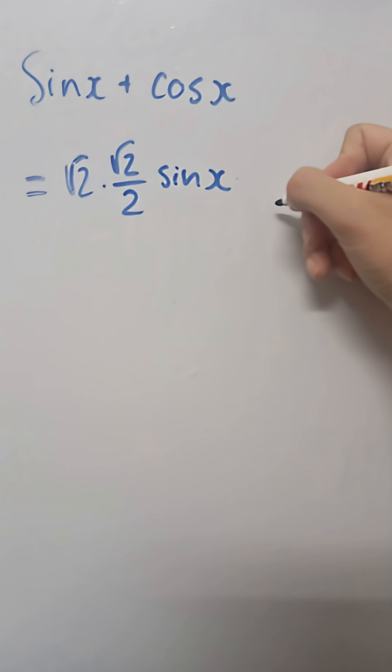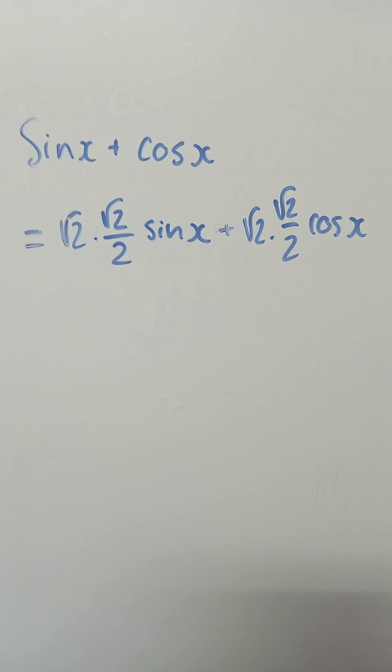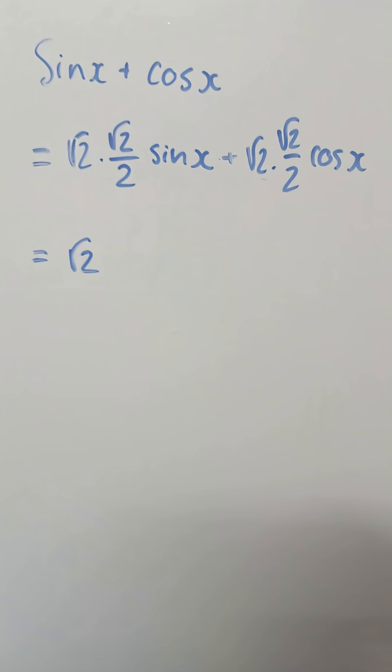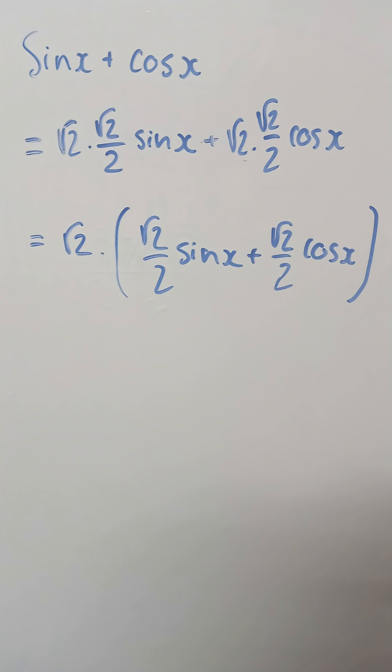You see, the demonstration is very tricky. At first we have to add the multiplication of the square root of 2 times itself over 2 to each function, because it will just equal to 1. Then group the square root of 2. We will have a new sum multiplying the square root of 2.